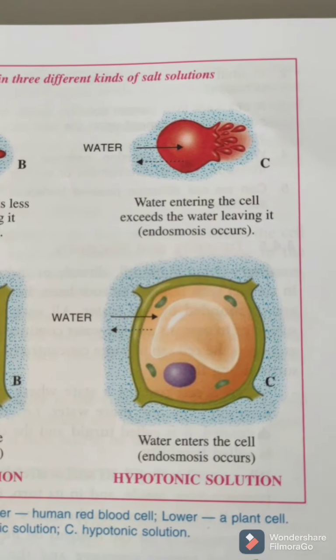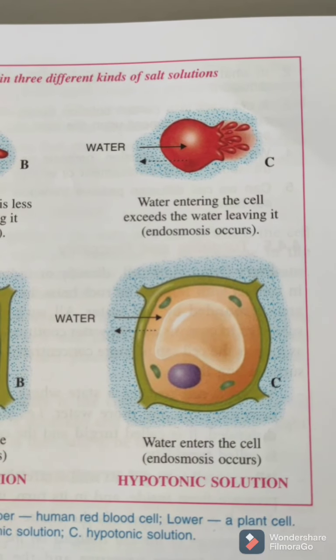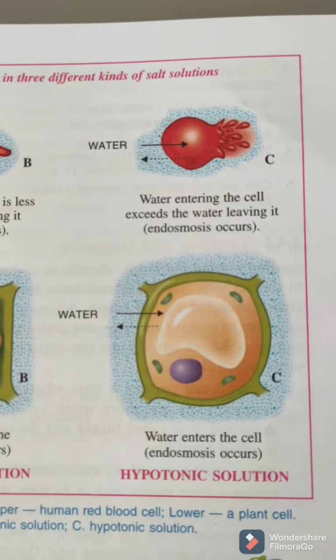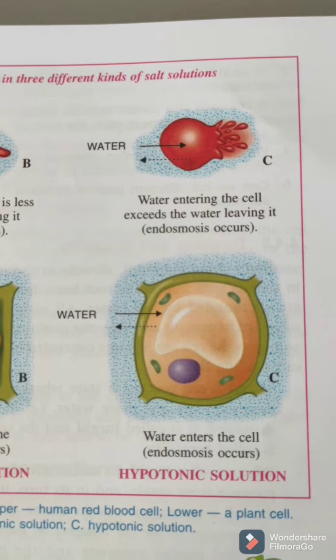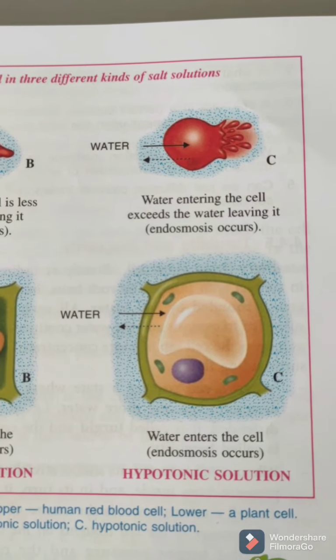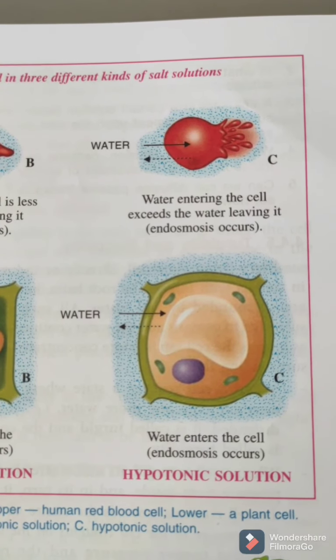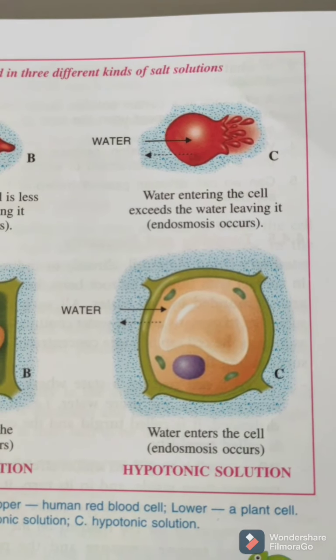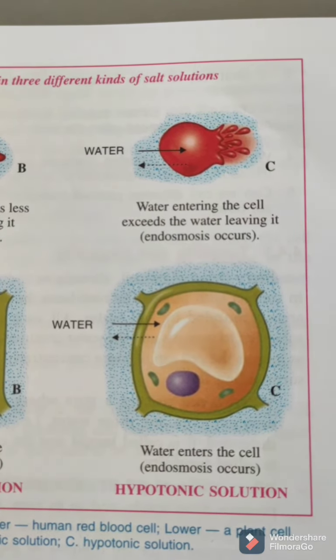As another example, spirogyra — an algae — also shrinks when placed in a hypertonic solution. That covers today's topic. In the next class, we will cover plasmolysis and deplasmolysis. Thank you, students.